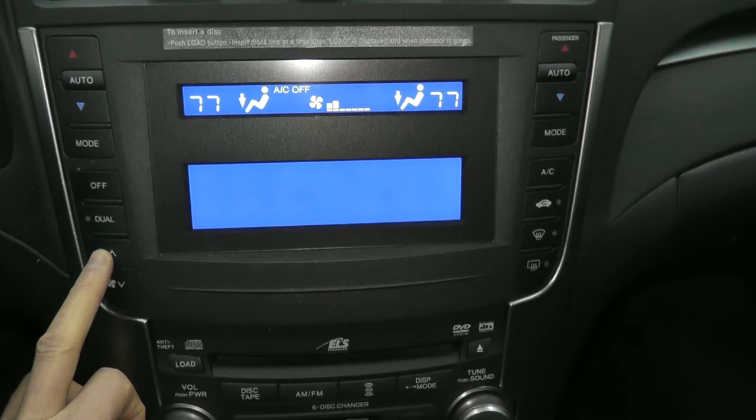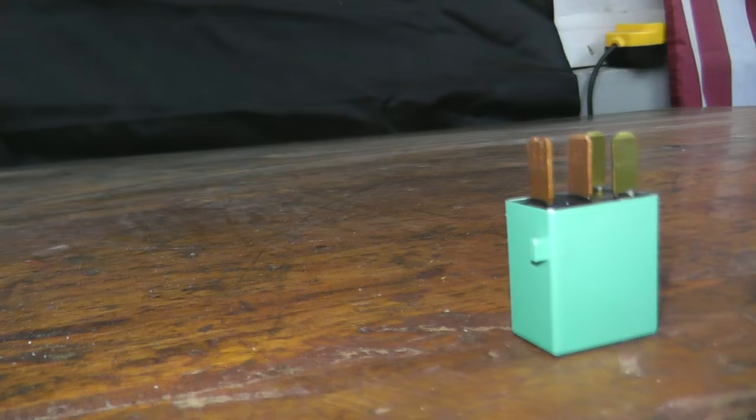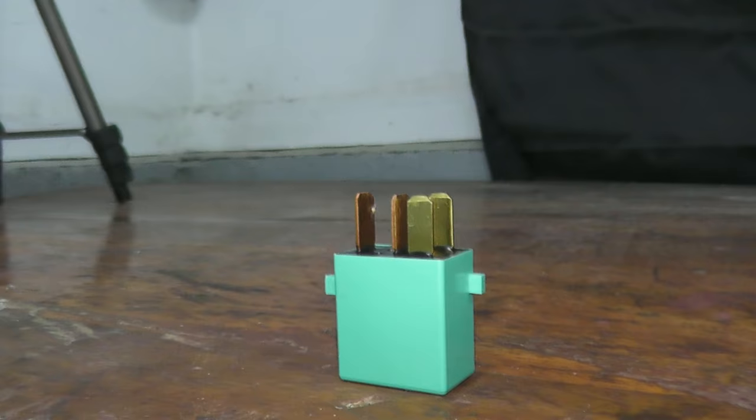Today we're looking at a blower motor fan relay. When you attempt to turn on the heating, ventilation, or air conditioning inside your vehicle and nothing is coming out of the vents, typically it's a blown relay or the motor itself is no longer working. You can quickly diagnose what's going on just by testing the relay. A lot of times that's just the quickest thing to do.